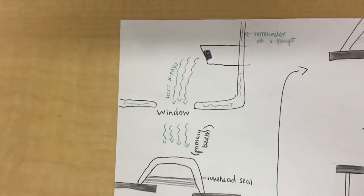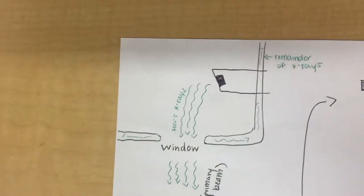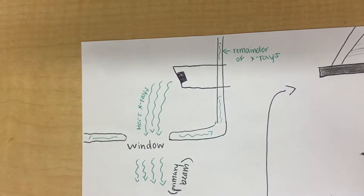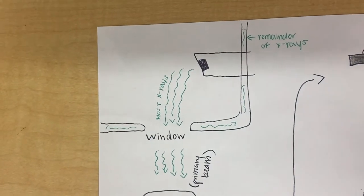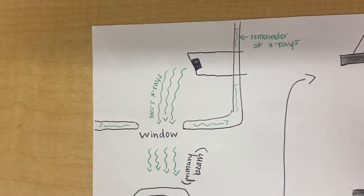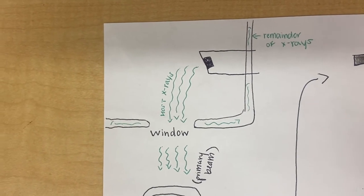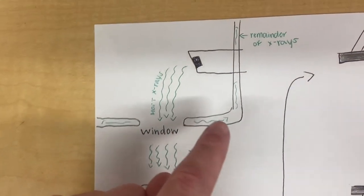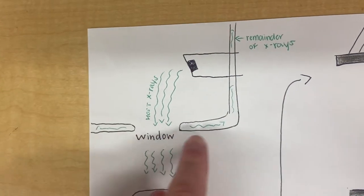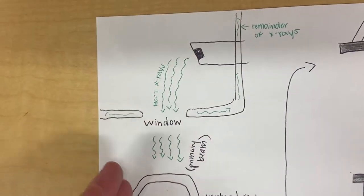The reason the tungsten target is at an angle, as you can see here, is so it can direct the X-rays towards the window and PID. The X-rays that aren't used will be absorbed by the lead glass housing surrounding the cathode and anode before it exits the window.